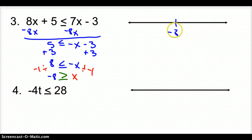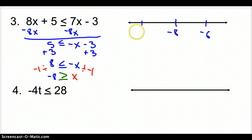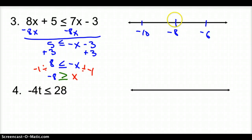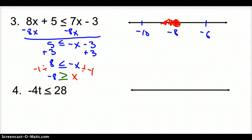I expect negative 8 in the middle, something greater to the right like negative 6, and something less to the left like negative 10. Your numbers are up to you. For graphing, it's a greater than or equal to sign, so we fill in the circle. Since negative 8 is the greatest x can be, we want all values less than negative 8, so we shade left.